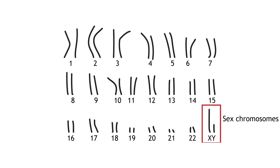In humans, DNA is organized into 46 chromosomes. One set of 23 chromosomes comes from the mother and the other set comes from the father. Twenty-two pairs are called autosomal chromosomes. These chromosomes are similar in length and have the same genes present at the same location regardless of whether they are received from the mother or father. However, for all genes, the allele or version present for each gene may be different from each parent.